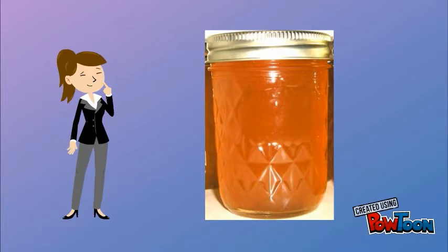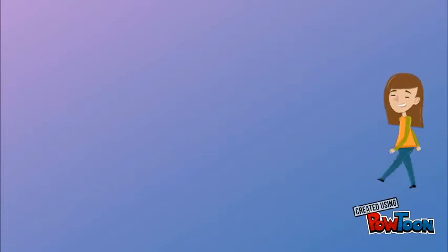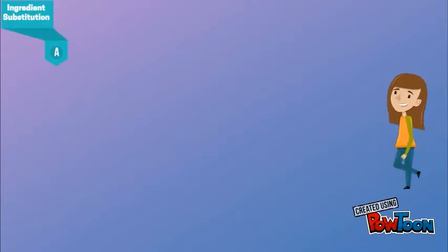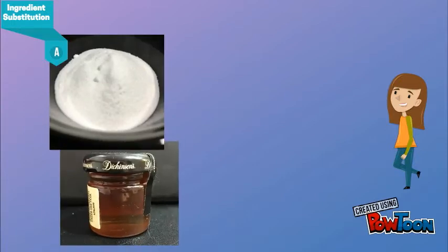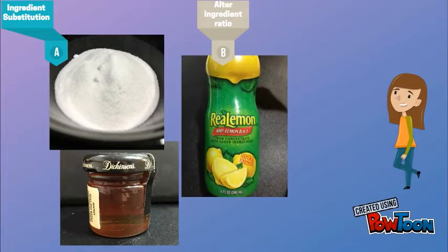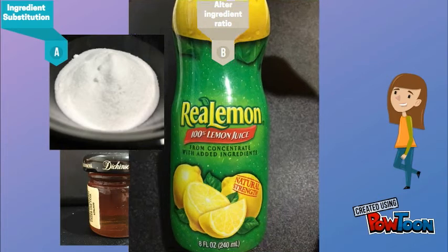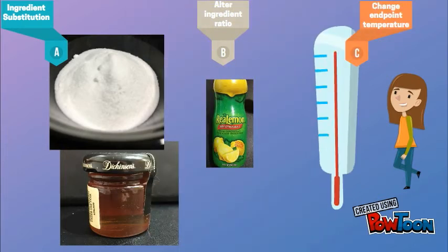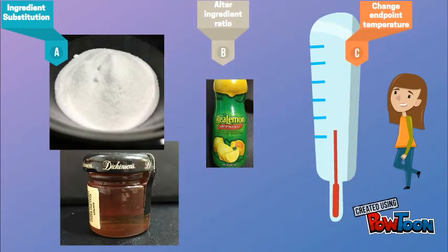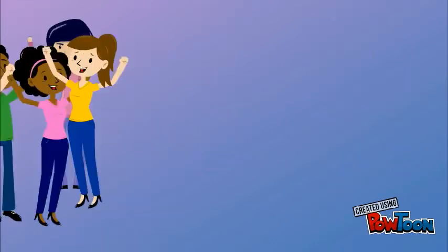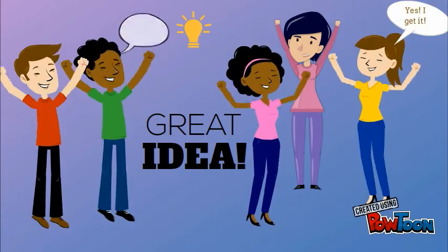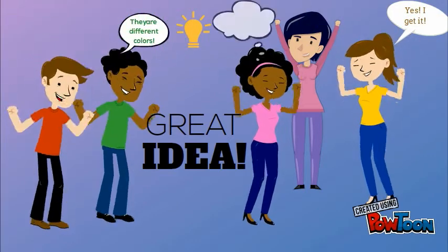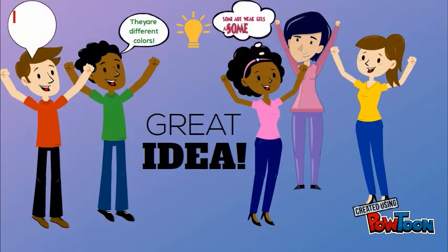Only two lab units will make the control; the others will have an alteration to their recipe. One of the ingredients will be swapped out — for example, honey may be substituted for regular sugar — or the ratio of a listed ingredient will be altered, so maybe the amount of acid used will be increased or decreased, or the endpoint temperature may be raised or lowered. This way, you can see the effect that the ingredients have on the final product. Some ingredients affect flavor, others affect color, while others affect the degree of gelled formation, and some will contribute to multiple product characteristics.